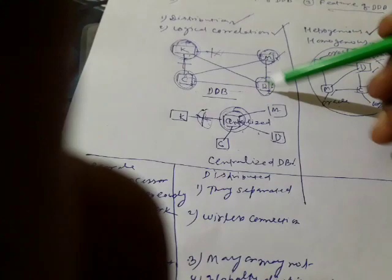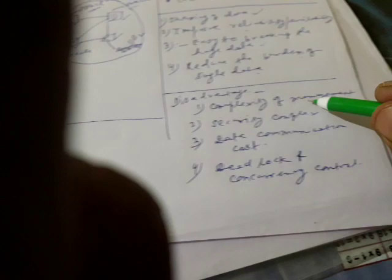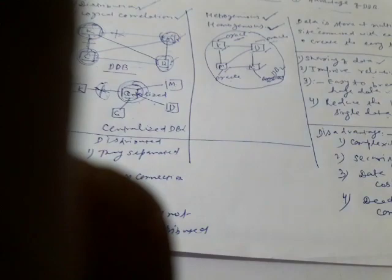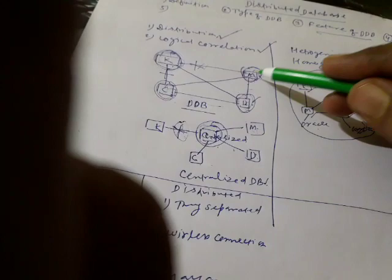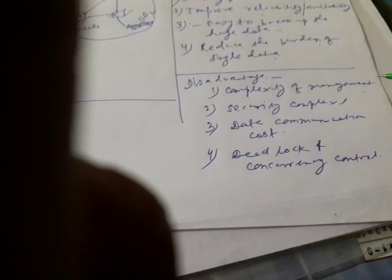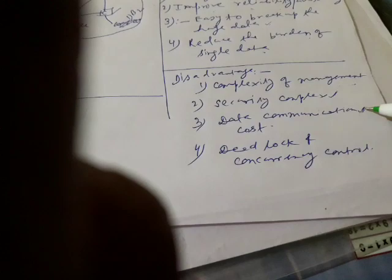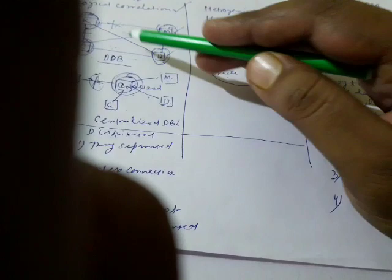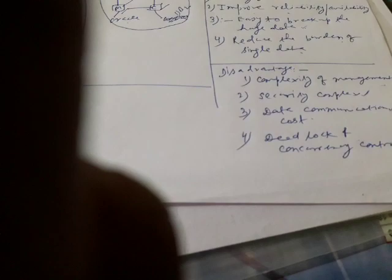There are also disadvantages. Because data is distributed at different locations, a complex structure is required to ensure the atomicity property of transactions — so complex management is required. Security also becomes more complex; with multiple sites, security requirements increase. Data communication overhead also increases. Deadlocks can occur due to concurrent access of data at different sites, and concurrency control techniques are required.